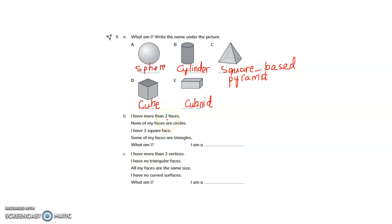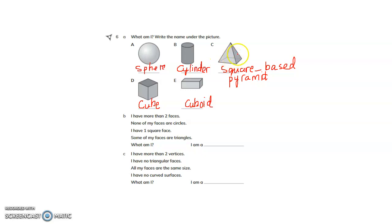I have more than 2 faces. None of my faces are circles. I have 1 square face. Some of my faces are triangles. What am I? I am a square-based pyramid. A square-based pyramid has 4 triangular faces and 1 square face — so 4 plus 1 equals 5 faces total.